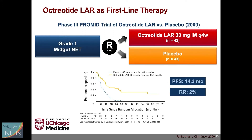This is the phase 3 PROMID study that looked at octreotide LAR. This trial enrolled patients with mid-gut neuroendocrine tumors with grade 1 tumors, randomized one-to-one to octreotide LAR at 30 mg versus placebo. The yellow curve represents patients treated with octreotide LAR and the blue dashed curve the placebo group. Octreotide LAR led to a median progression-free survival of 14.3 months versus 6 months in the placebo group. The response rate was 2%, meaning most patients had stable disease rather than dramatic tumor shrinkage.